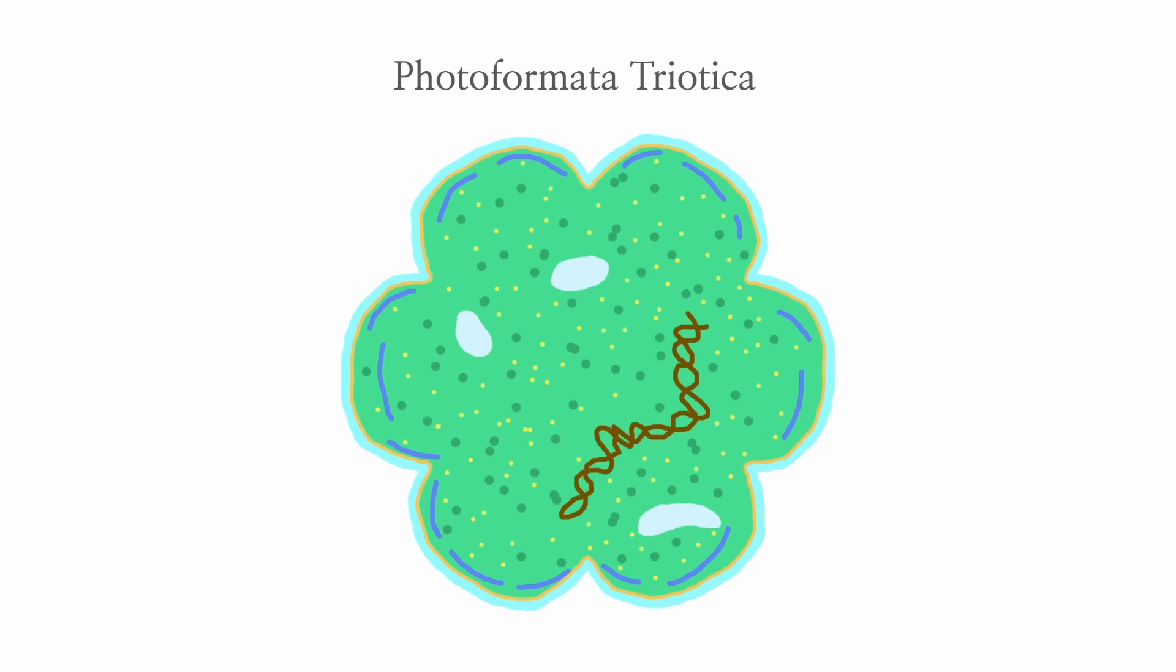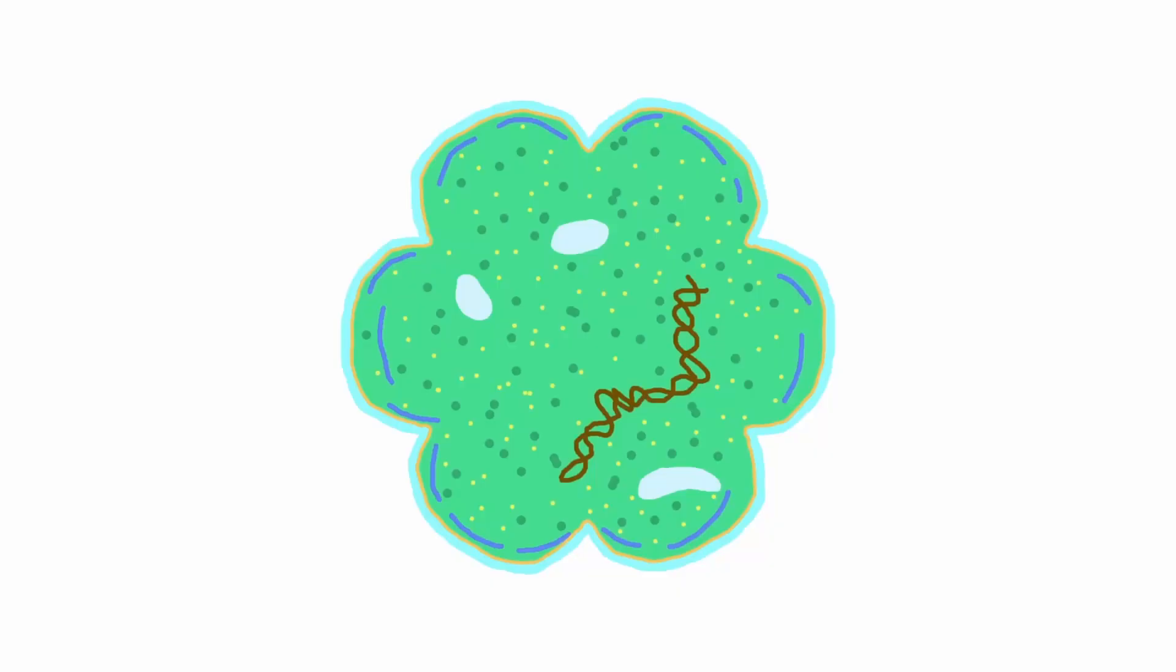Each and every community needs its foundation, and for this particular community, that is the species Photoformata triodica. This species is the primary photosynthesizer in the surface waters, or on seafloors shallow enough to be reached by light. Let's take a look at its internal structure, and see what makes these microbes so special. These cells are deceptively simple. They have no cytoskeleton, no membrane-bound organelles, and no nucleus.